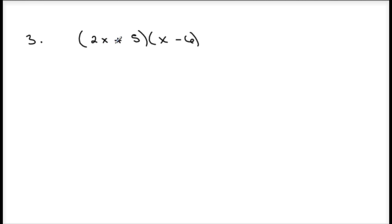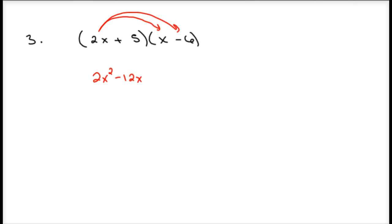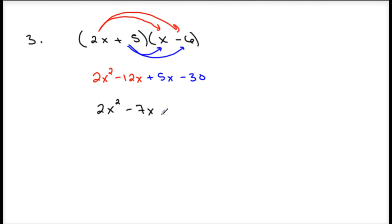Let's step it up a little bit. We have the quantity 2x plus 5 times the quantity x minus 6. Now I have a coefficient, so just watch the coefficient. First term by both terms: 2x times x is 2x squared; 2x times negative 6 is negative 12x. Moving on to my second term: positive 5 times x is positive 5x; positive 5 times negative 6 is negative 30. Combine like terms: 2x squared minus 7x minus 30.